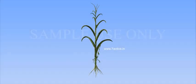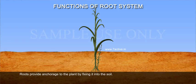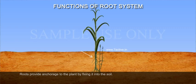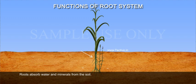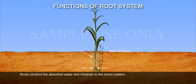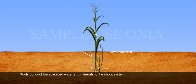Functions of root system. Roots provide anchorage to the plant by fixing it into the soil. Roots absorb water and minerals from the soil. Roots conduct the absorbed water and minerals to the shoot system.